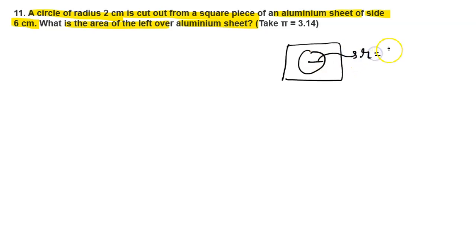And the side of the aluminium sheet is 6 centimeters. We have to find the area left when the circle is removed from this aluminium sheet.